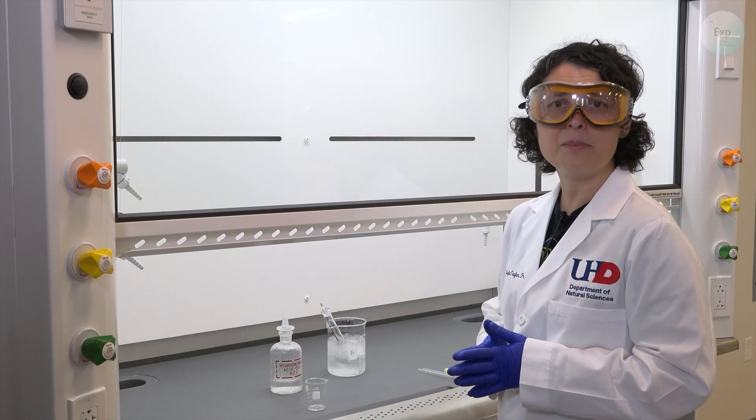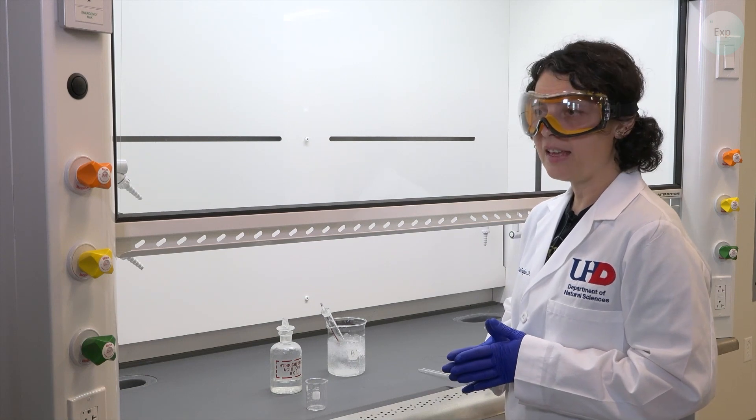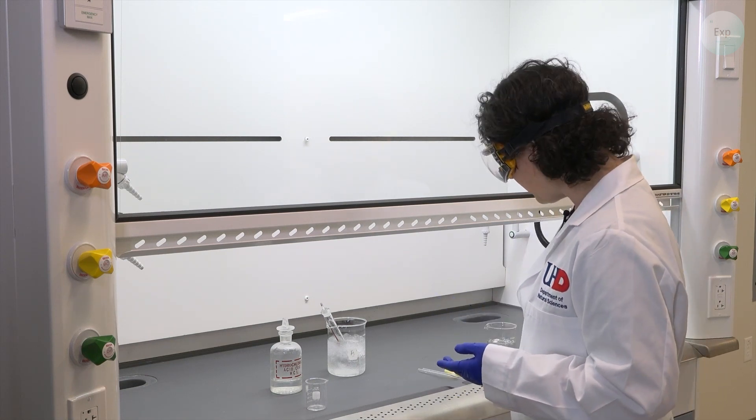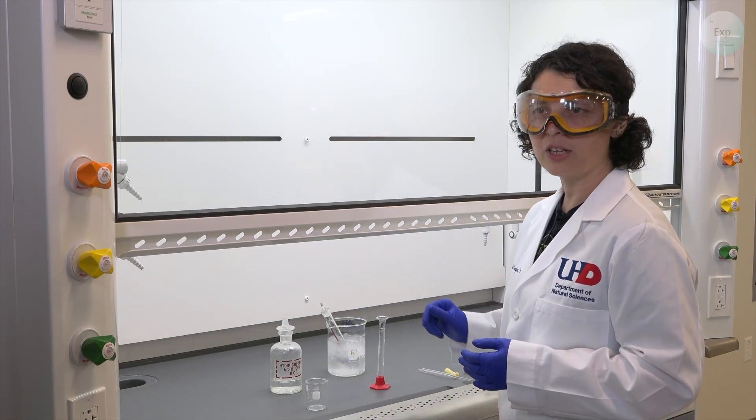The next thing is measuring the amount of concentrated hydrochloric acid that we're using. We will need 8.47 milliliters. And so for that, we will use a 10 milliliter graduated cylinder and a beaker from which the transfer will occur.